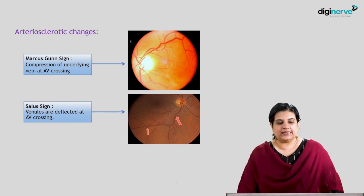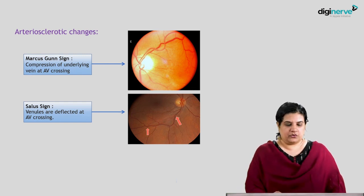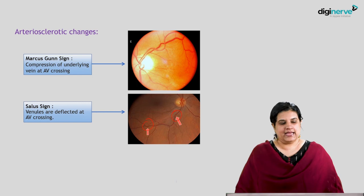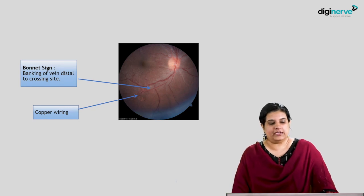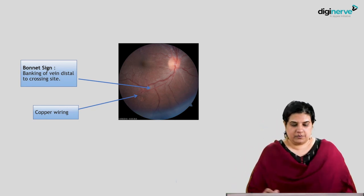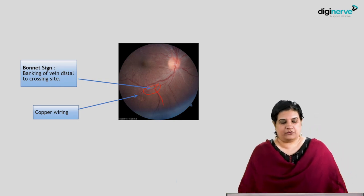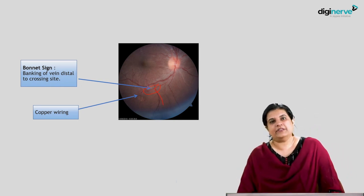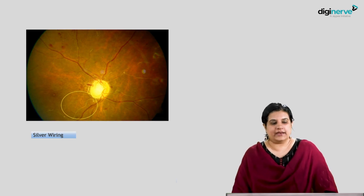Through arteriosclerotic changes, we can see the Marcus Gunn sign, which indicates compression of the underlying vein at the arteriovenous crossover point. The Salus sign, visible at the crossover areas, suggests that venules are being deflected at the AV crossover points. The Bonnet sign suggests banking of the vein distal to the crossing site, where the vein deflects quite away from the crossover point. With continuing changes, we will see copper wiring and in advanced cases, silver wiring.